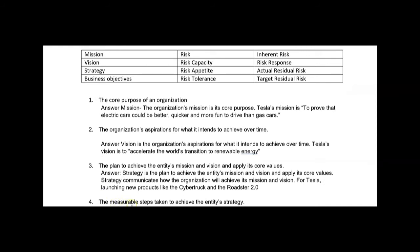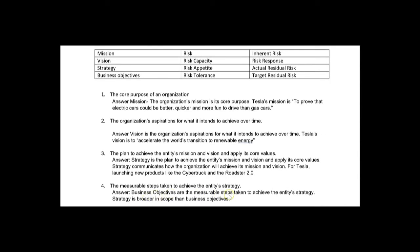Number four: the measurable steps taken to achieve the entity's strategy — that's what business objectives are. Business objectives are more specific while strategy is broader in scope. The theme here is association, not memorization. We've associated business objectives with strategy, and strategy with mission and vision. When you have that 'aha moment,' write it down in your own words — that's how you remember it.